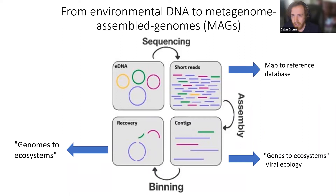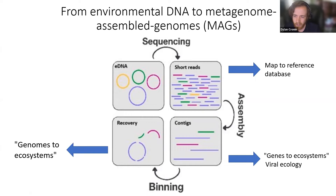We start from environmental DNA and build metagenome-assembled genomes, which are MAGs. You may see MAGs or bins referencing these genomes — they essentially mean the same thing. MAGs are typically thought of as a more final, refined product, while bins are the raw product, but for the most part you can treat them as the same term.